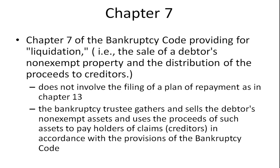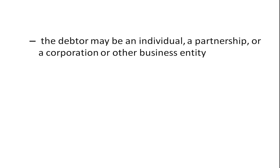The bankruptcy trustee gathers and sells the debtor's non-exempt assets and uses the proceeds to pay holders of claims in accordance with the provisions of the bankruptcy code. So assets get sold and the money gets paid out in order — for example, employees of a business might get paid first and bondholders last. There is some defined order in which creditors get paid. The debtor may be an individual, a partnership, a corporation, or some other type of business entity.